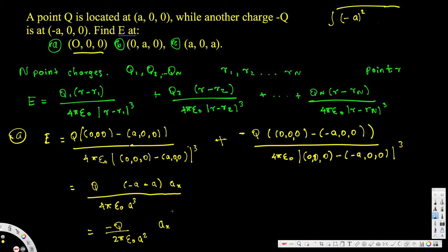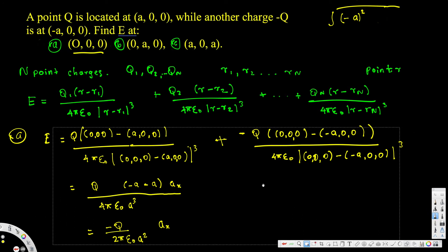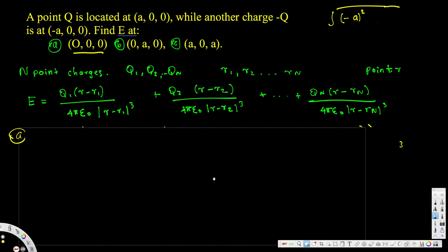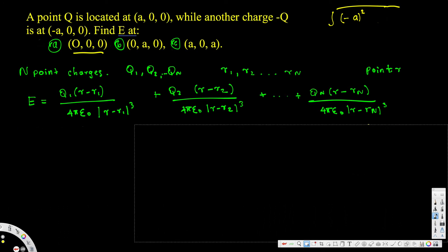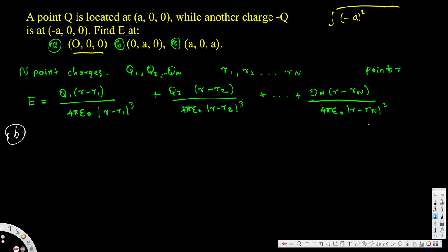That's the answer for Part A. Now let's look at Part B, which asks us to find the electric field at (0, a, 0). The generic equation remains the same. Our location r is (0, a, 0), r1 is (a, 0, 0), and r2 is (negative a, 0, 0). We have two charges so we apply the formula twice.